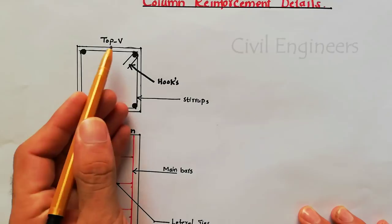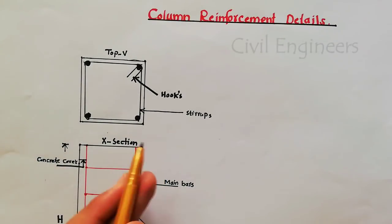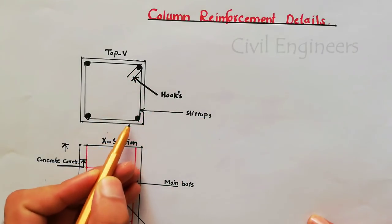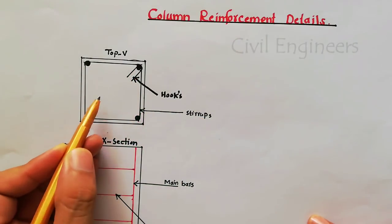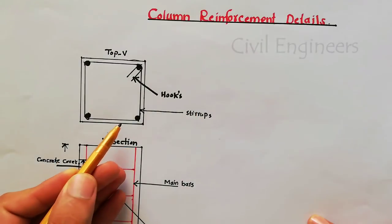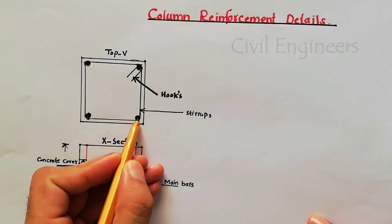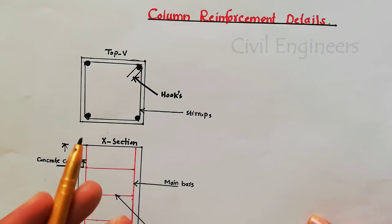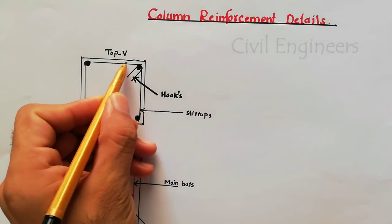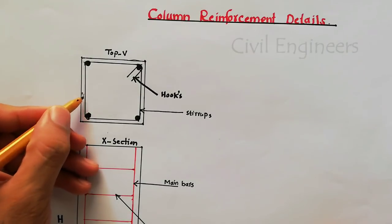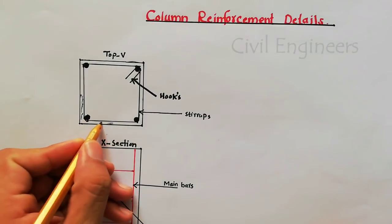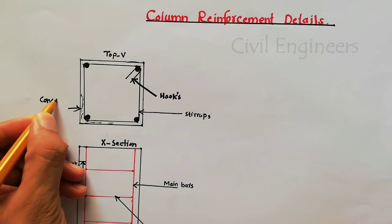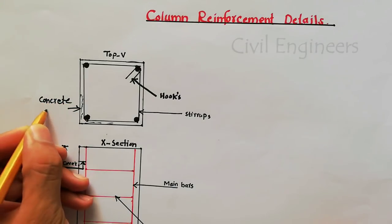This is the top view and this is the cross section for this column. Here we have four numbers of steel bars — we call them main bars or longitudinal bars. This free space around them is called the concrete cover.